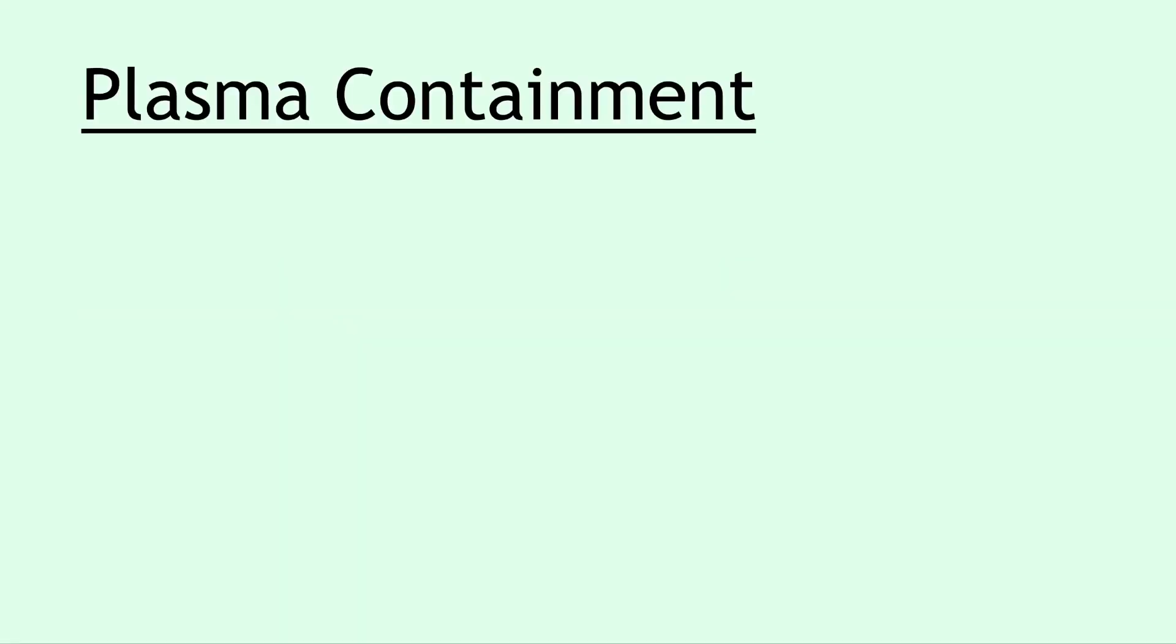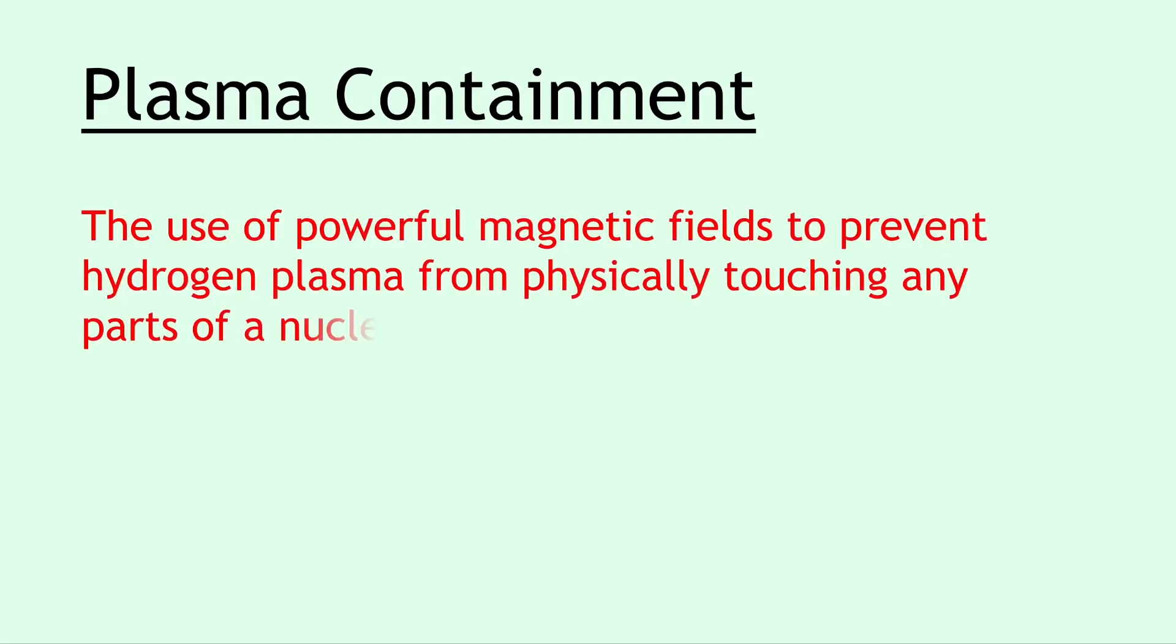And lastly we have plasma containment which is related to nuclear fusion. Plasma containment is the use of powerful magnetic fields to prevent hydrogen plasma from physically touching any parts of a nuclear reactor, because if it does it's going to melt it. And this is done using powerful superconducting magnets.